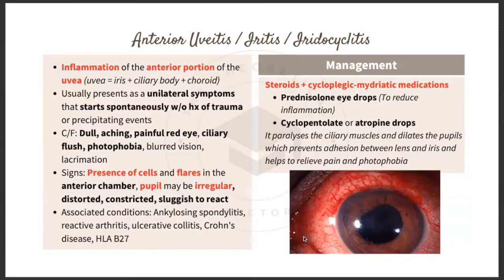The first topic is anterior uveitis, also known as iritis and iridocyclitis. It is the inflammation of the anterior portion of the uvea, which consists of the iris, ciliary body, and choroid. It usually presents as unilateral symptoms — only one eye is affected — and starts spontaneously without history of trauma or any precipitating events.